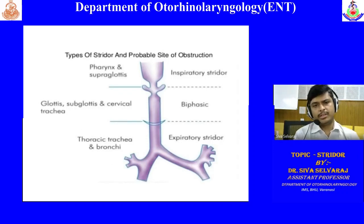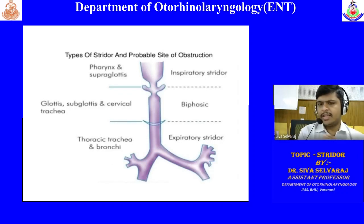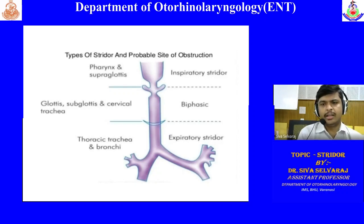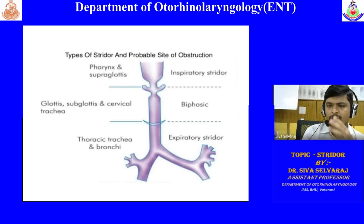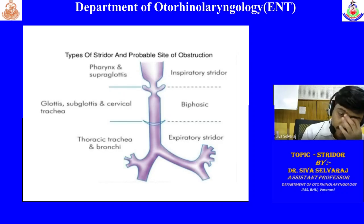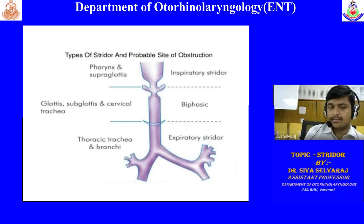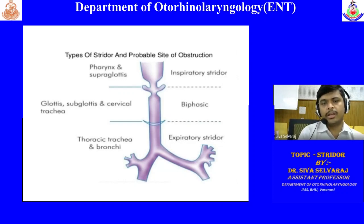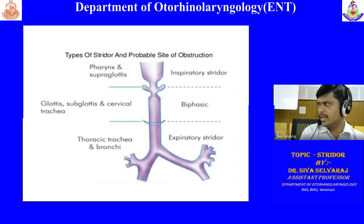Based on the phase of respiration, stridor is divided into inspiratory stridor, expiratory stridor, and biphasic stridor (present on both inspiration and expiration). Inspiratory stridor is seen in upper respiratory tract lesions up to the level of the glottis or above — up to the supraglottis. Lesions at the glottis, subglottis, and upper part of the trachea can produce biphasic stridor.